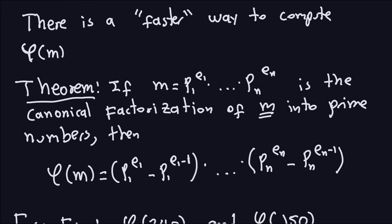Now what we want to do in this video is the following. There is a faster way to compute phi of m, assuming that I know the factorization of m. And if you remember, that usually is not an easy task if m is a very large number. But it's going to work for some numbers where we can actually compute the factorization. So the way to compute this is there is a theorem — a fact in mathematics — that tells me exactly how to compute this assuming that I know the factorization of m in prime numbers.